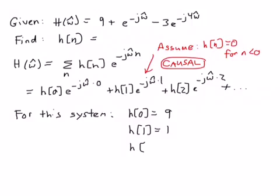And h of, well, let's see what this last term is. We look up here. The exponent, the thing multiplying the exponent up here is a 4. So that's associated with n equal 4. So h of 4 is equal to minus 3.